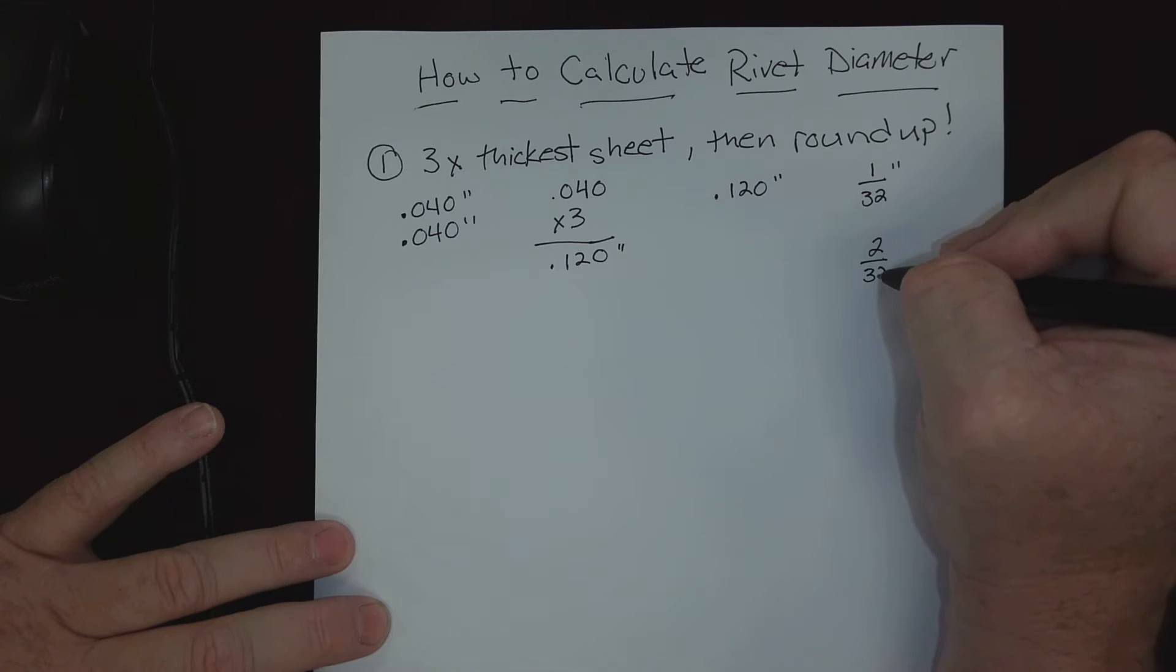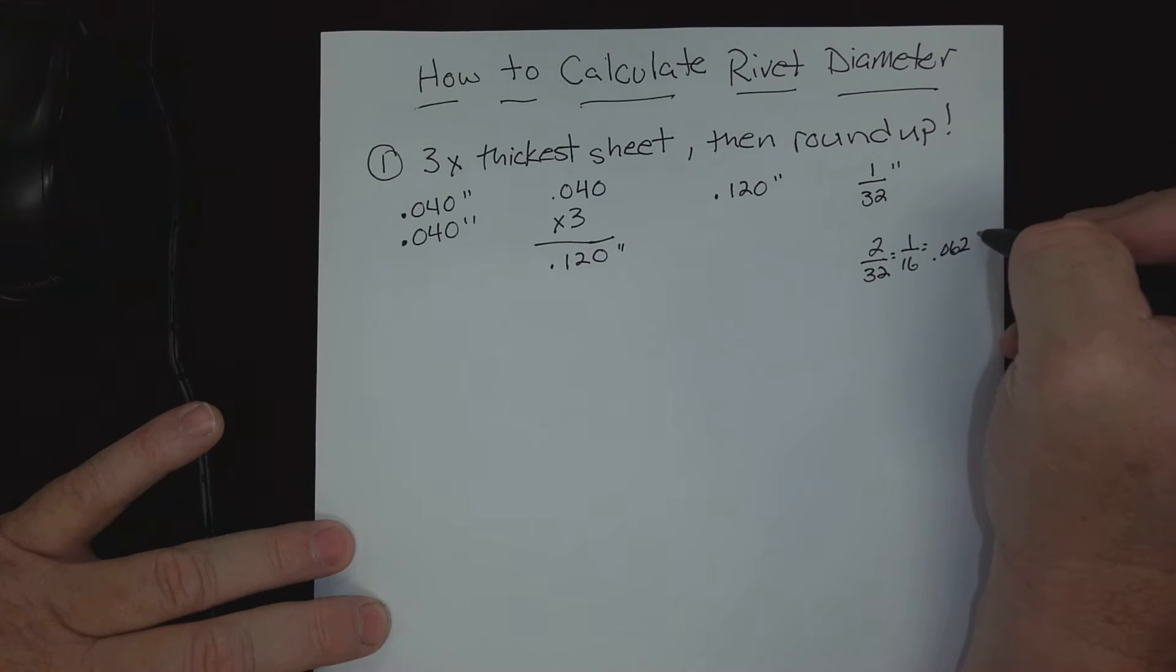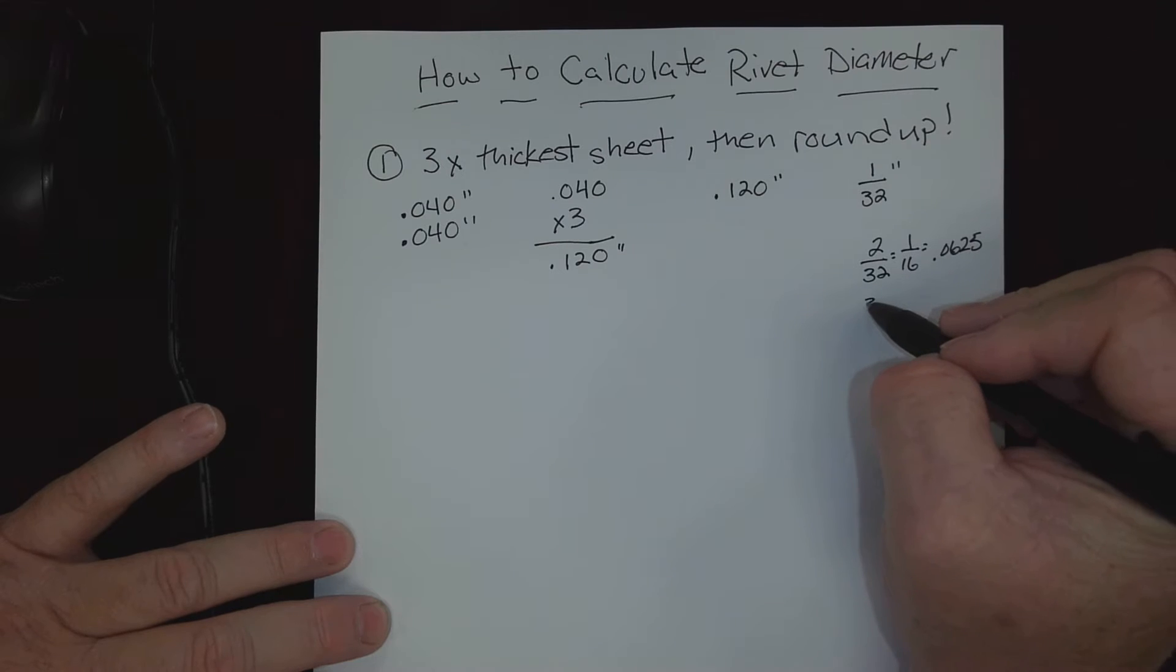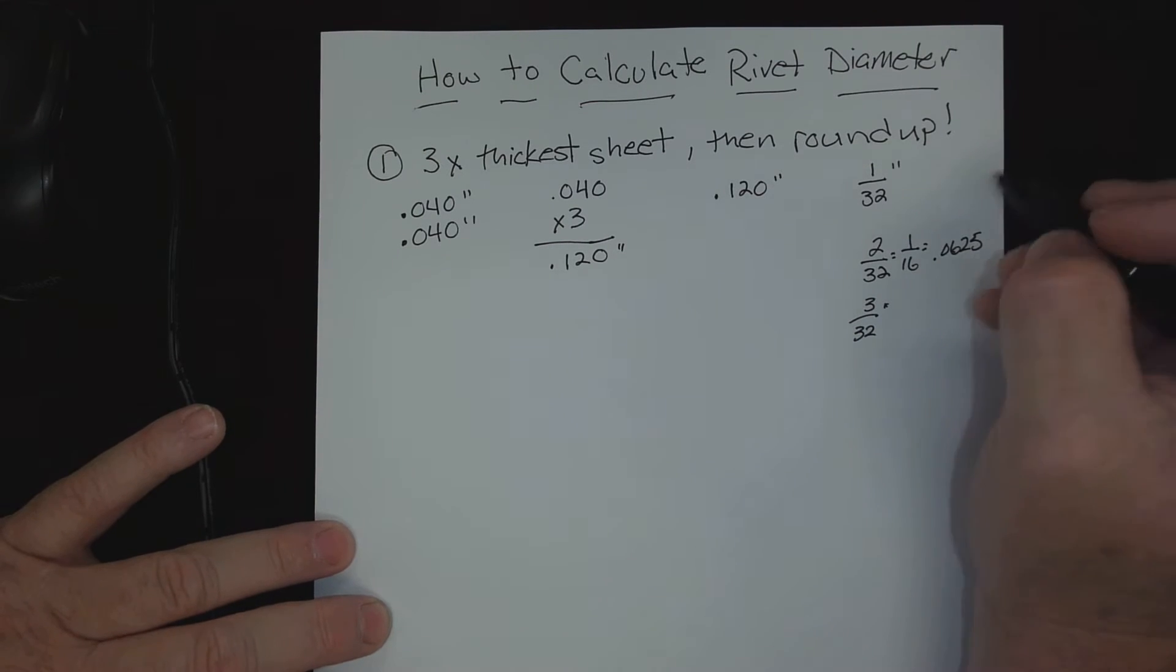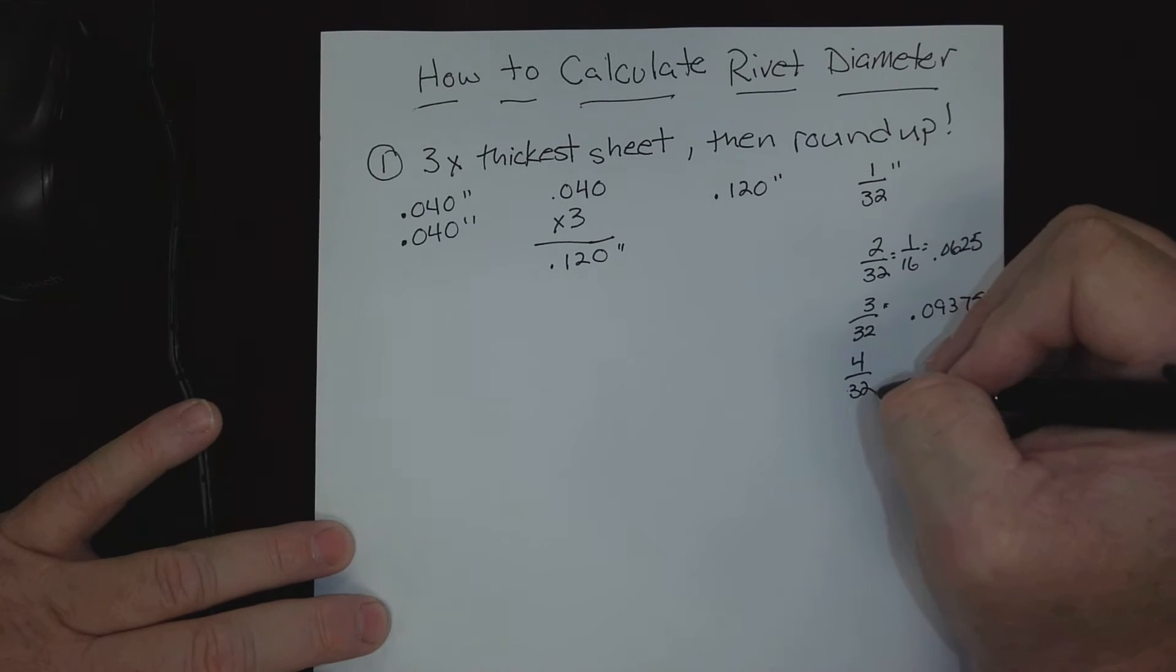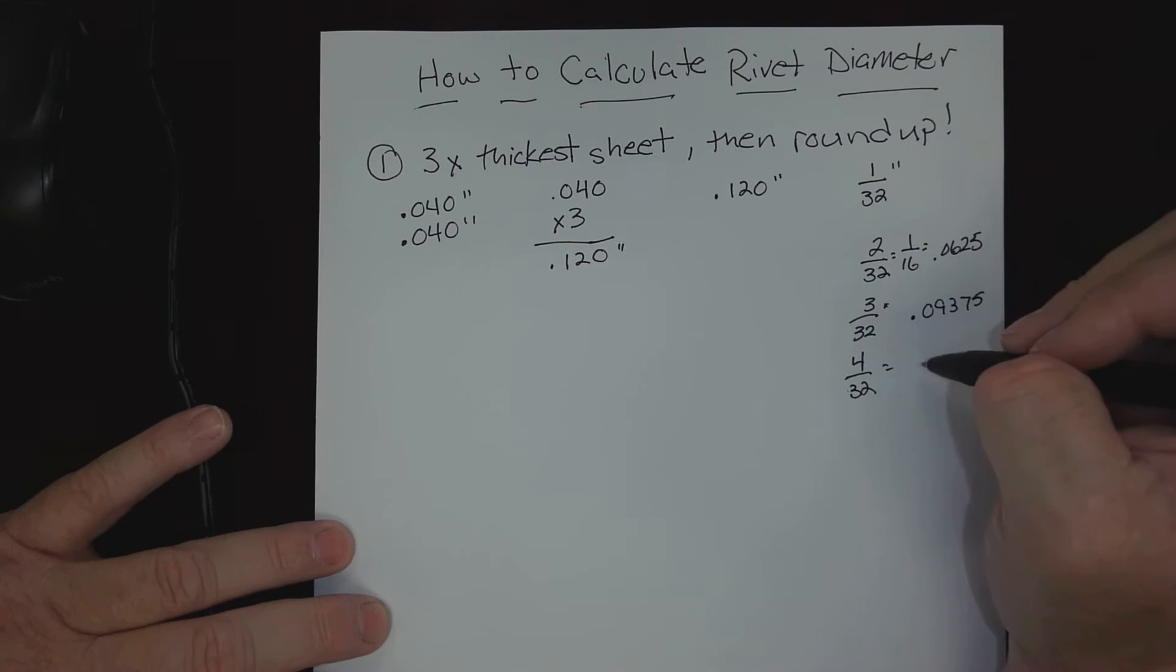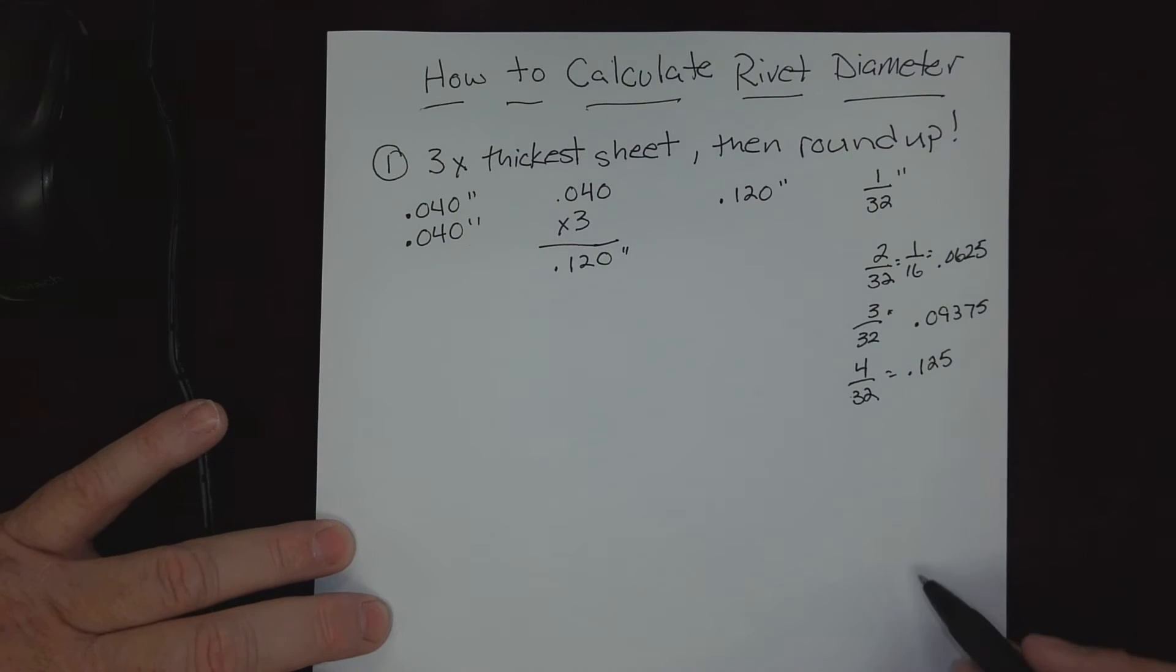Well, that means that if I have two thirty-seconds, that would also equal one-sixteenth, which would equal 0.0625. Three thirty-seconds of an inch won't reduce, but that would be equivalent - if we divided three by thirty-two, that would give us 0.09375. Four thirty-seconds, which is a common rivet size - number four would be equivalent to 0.125. If we created a little chart or sheet with all of our common rivet sizes converted to decimals, or we can take our calculator, we can see here.